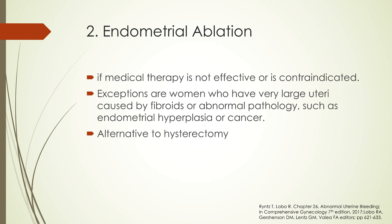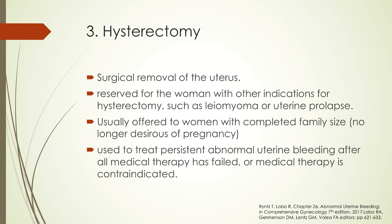Another surgical option is endometrial ablation, offered only if medical therapy was not effective or is contraindicated, or in patients who are not desirous of pregnancy. Exceptions are women with very large uteri caused by fibroids or abnormal pathology such as endometrial hyperplasia or cancer. Endometrial ablation is also a good alternative to hysterectomy. The last surgical option is hysterectomy — reserved for women with other indications such as leiomyoma or uterine prolapse, only offered to women with completed family size, and ideal for women with persistent AUB after all medical therapy has failed or is contraindicated.